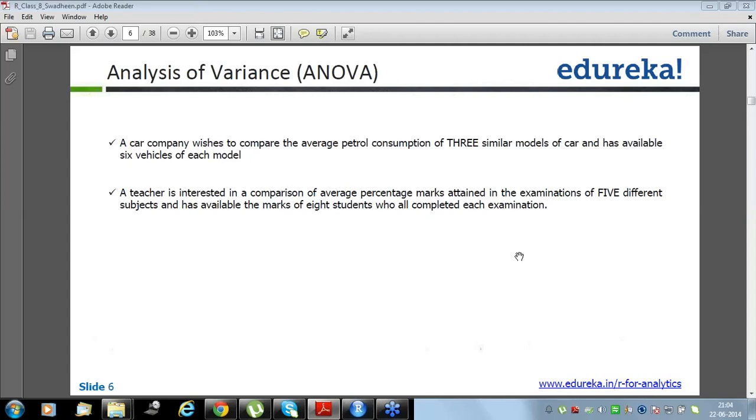They have one example. A car company wishes to compare the average petrol consumption of three similar models of car and has available six vehicles of each model. So imagine there is a six by three matrix where the columns have three different cars and rows have six vehicles of each model. And then we need to compare the average petrol consumption based on their average.